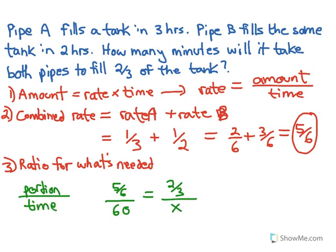Since we found that combined rate, and we know that's an hourly rate, we're filling five-sixths of it in one hour, or sixty minutes. We have to keep that ratio the same when we're filling two-thirds. So that's going to be for x minutes, and that's the x we're looking for.